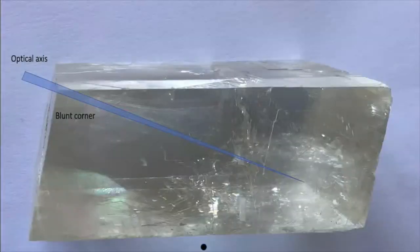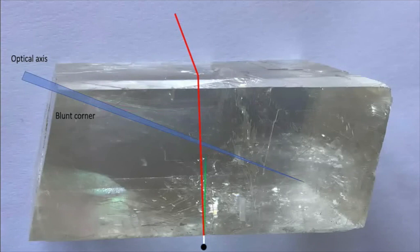In previous videos we talked that across calcite R units the light subdivides into rays, the ordinary and extraordinary rays.